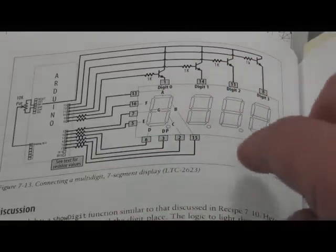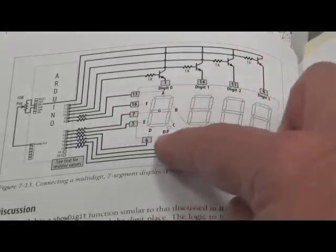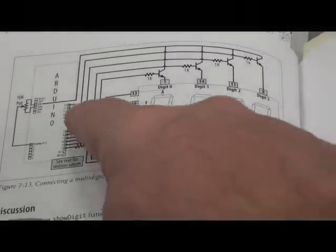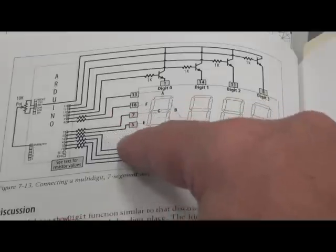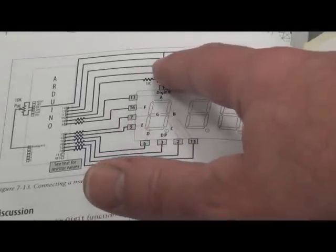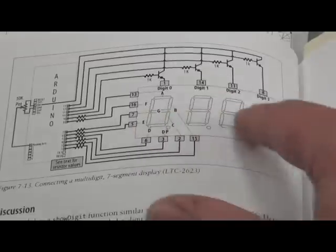The other eight would be for the segments to turn on for that digit. So to actually display a number here, you would output which of the segments you want to turn on and then drive the digit which those segments go to.